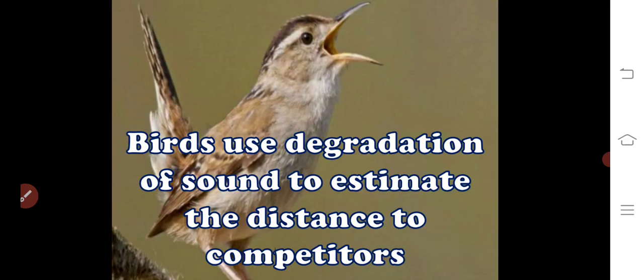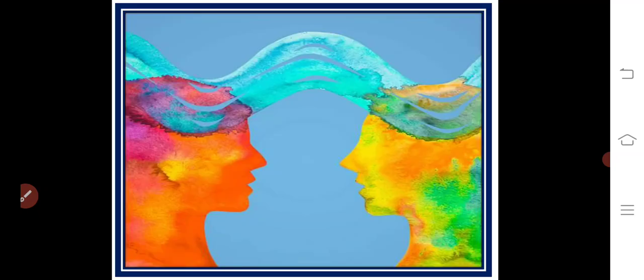Birds use degradation of sound to estimate the distances to competitors. Signal degradation during propagation is not always a detriment. Many birds use degradation of sound to estimate the distance to competitors. As long as there is sufficient degradation, a territory owner can conclude that the other singers are too distant to be threatening.